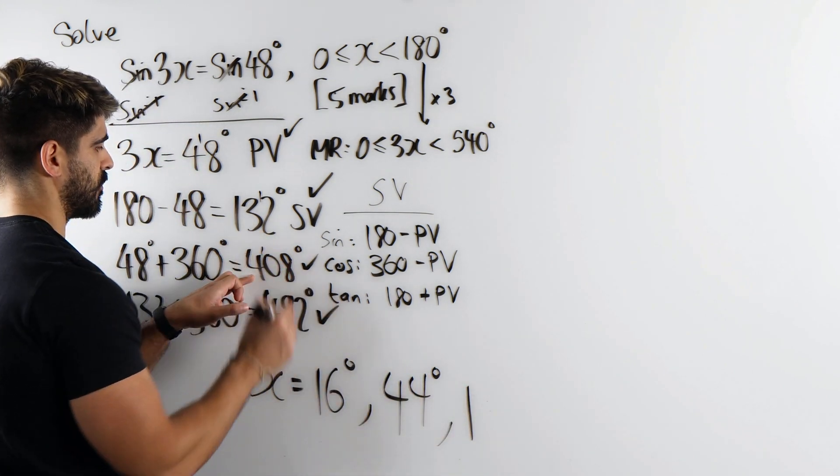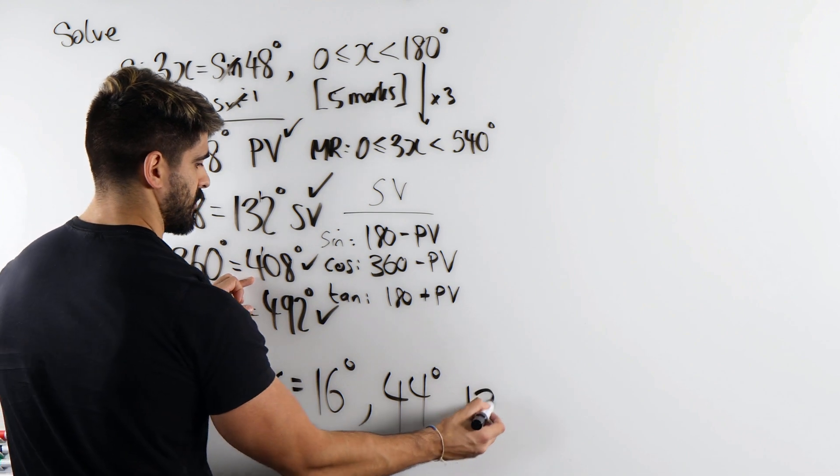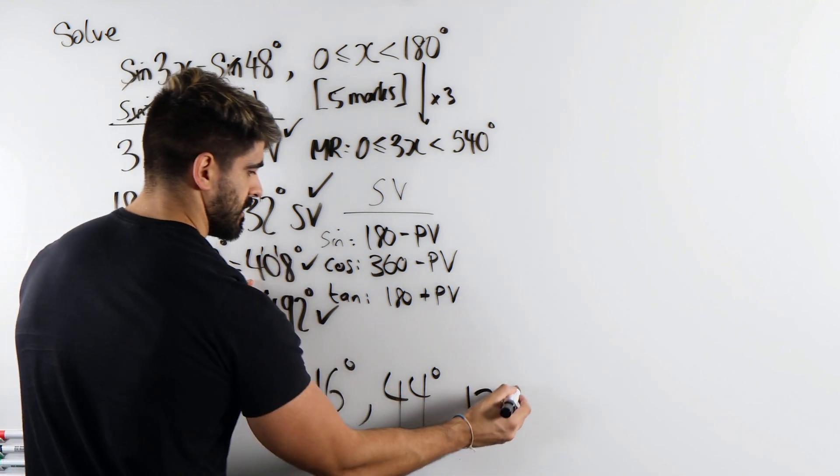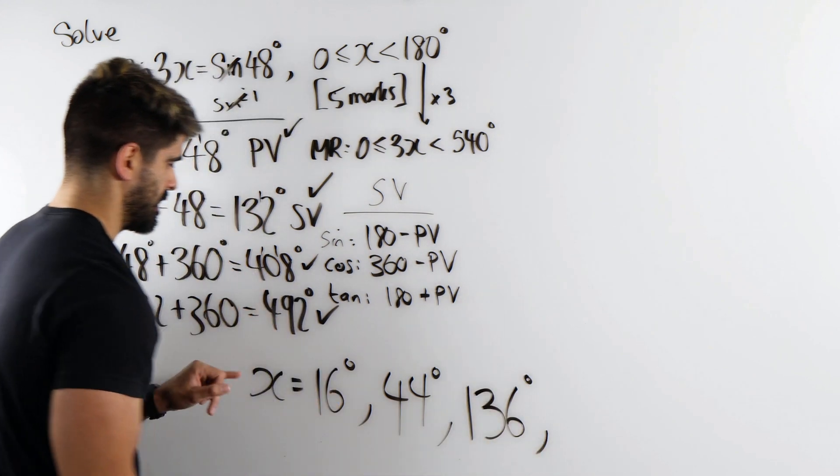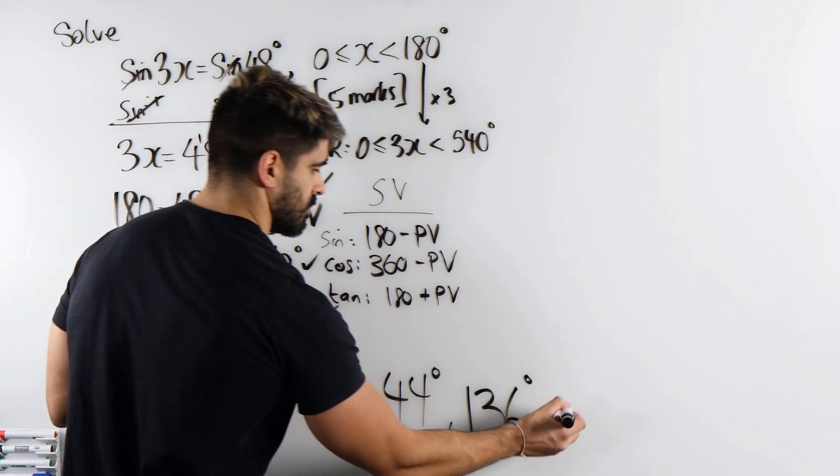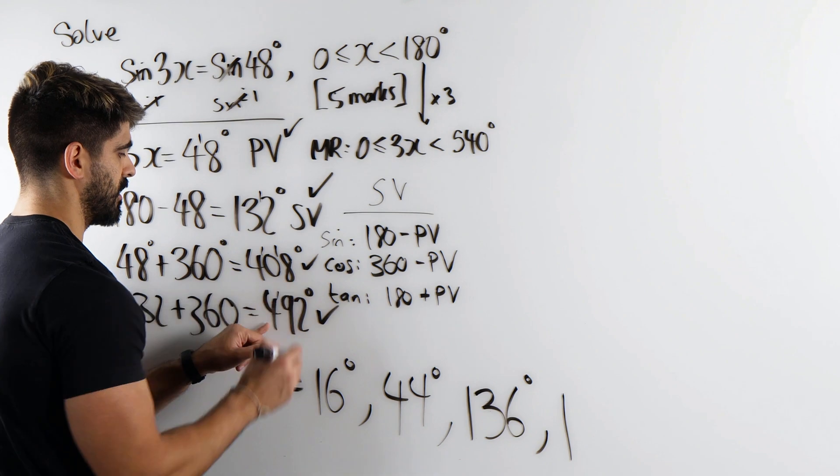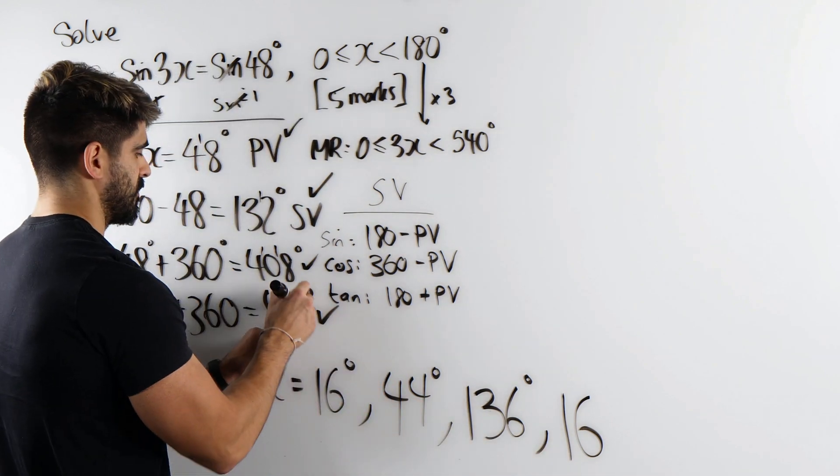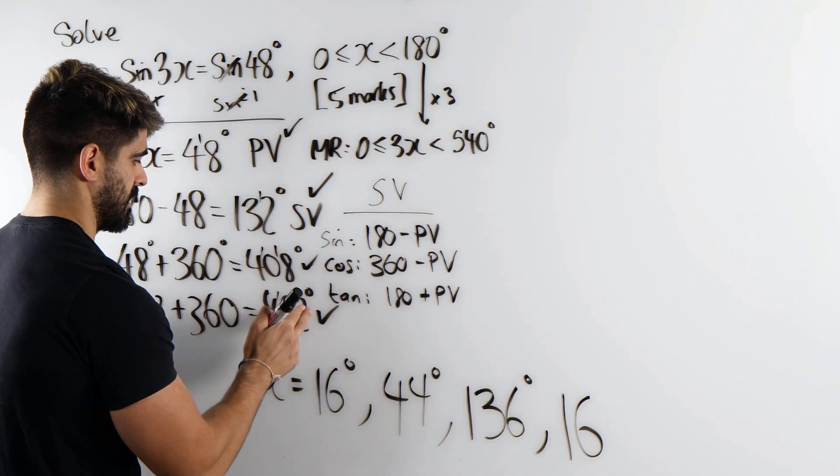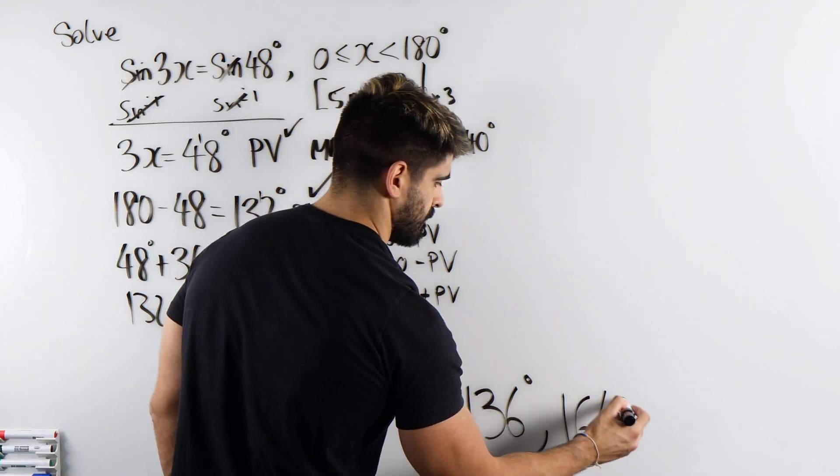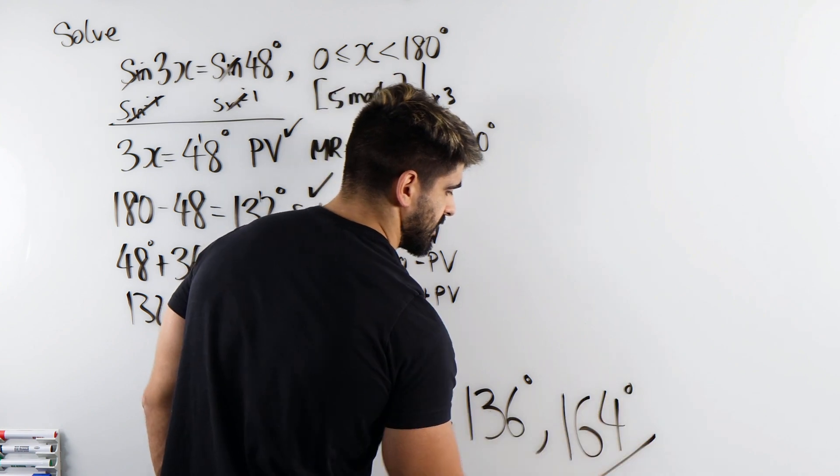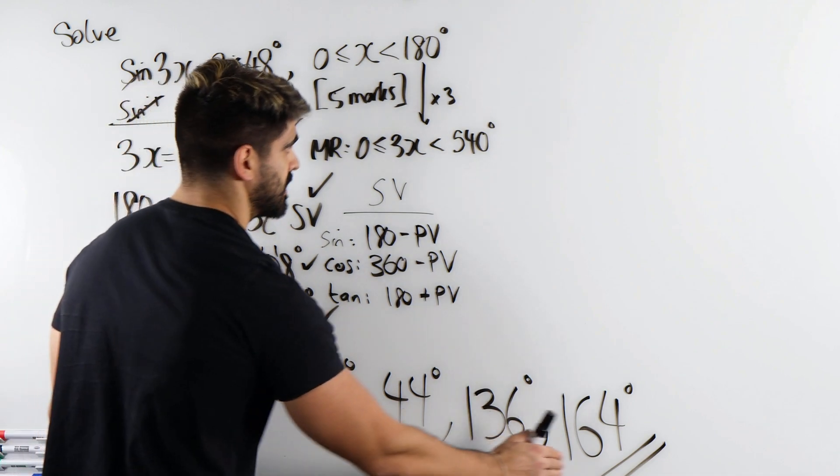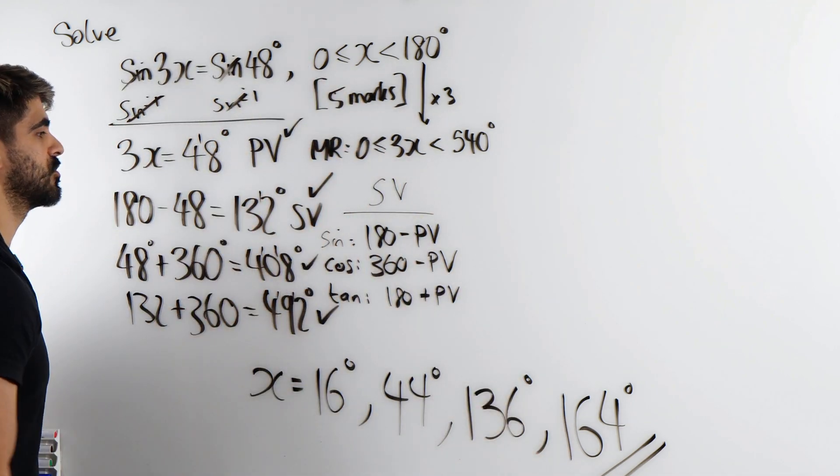Then 3 goes into 4 once with a remainder of 1, into 10 three times with a remainder of 1, then 6, so 136. Then into 4 once with a remainder of 1, into 19 six times with a remainder of 1, then into 12 four times, 164 degrees. And you can see all of these four solutions are now in our original range.